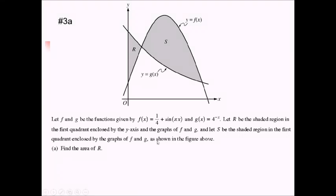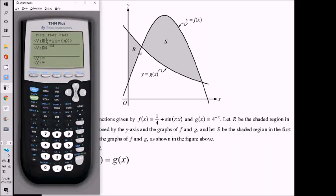For this calculator-based free-response problem, we're given the f and g functions. F is some kind of trig function, g is an exponential function, and R is the shaded region, as is S, between these two functions in the first quadrant. For our first task, we want to find the area of region R. I need to find the intersection point, so I'll set f of x and g of x equal to each other on my graphing calculator. I've entered f of x as my Y1 and g of x as my Y2, and I'm not really sure about the window, so I'll just do zoom 6.